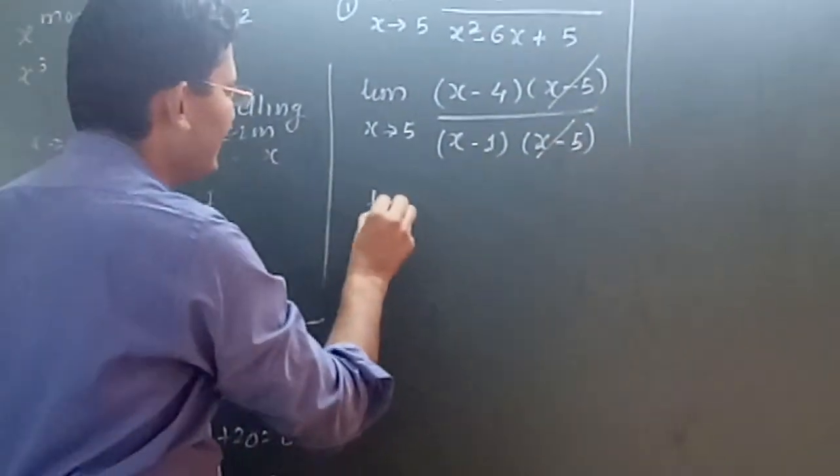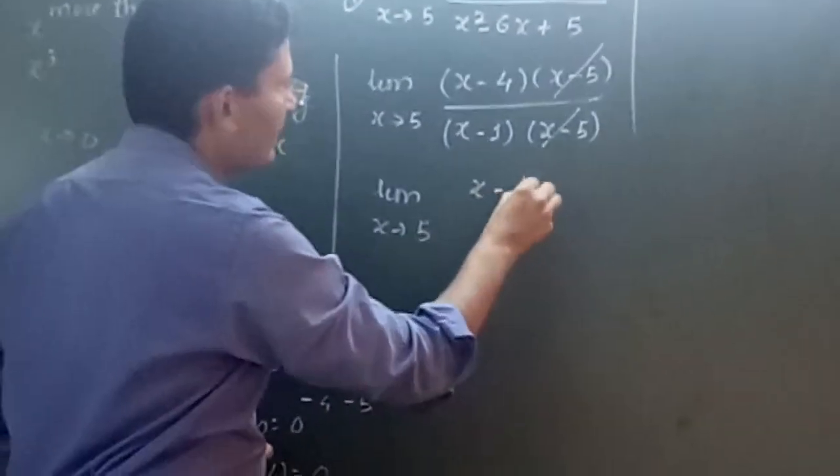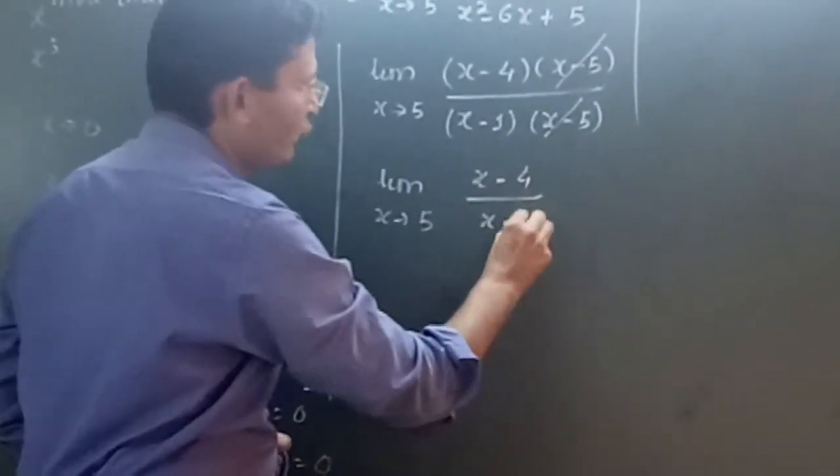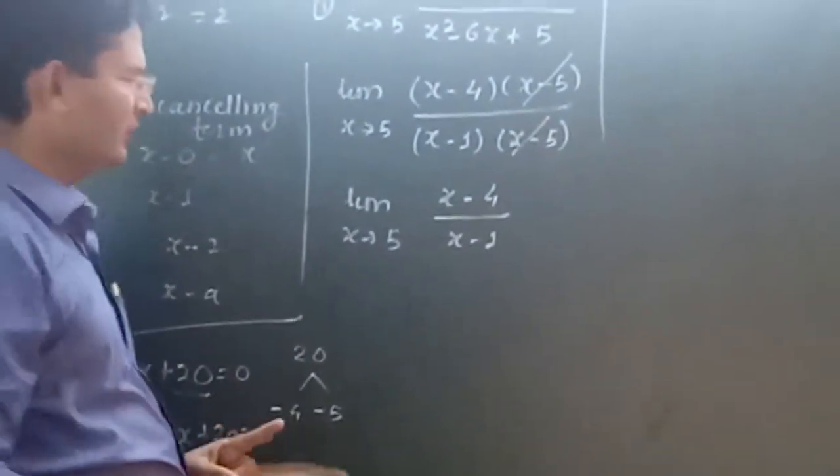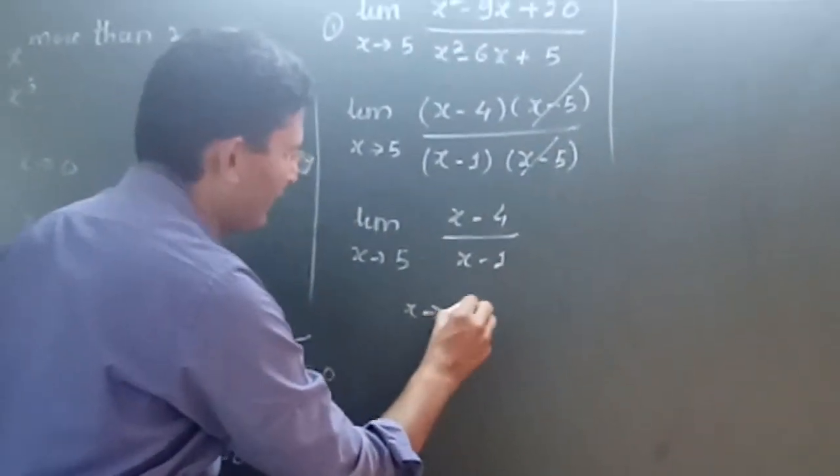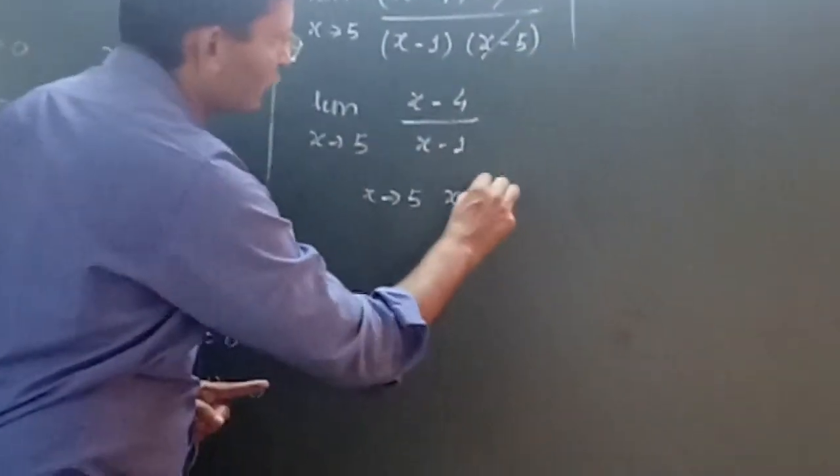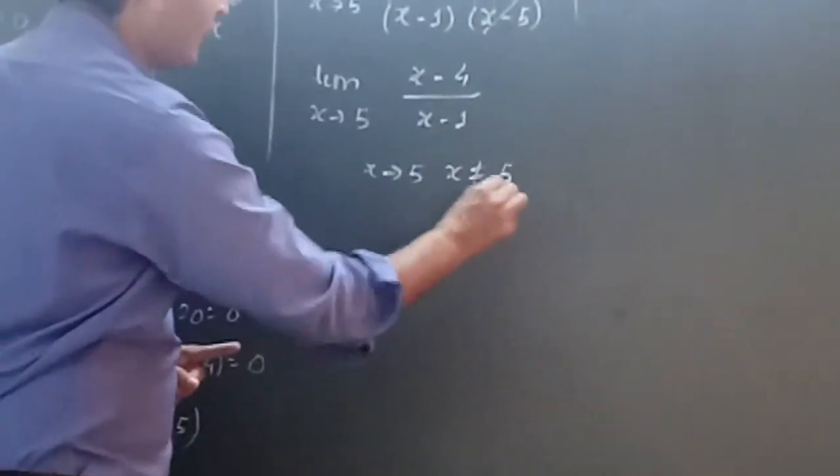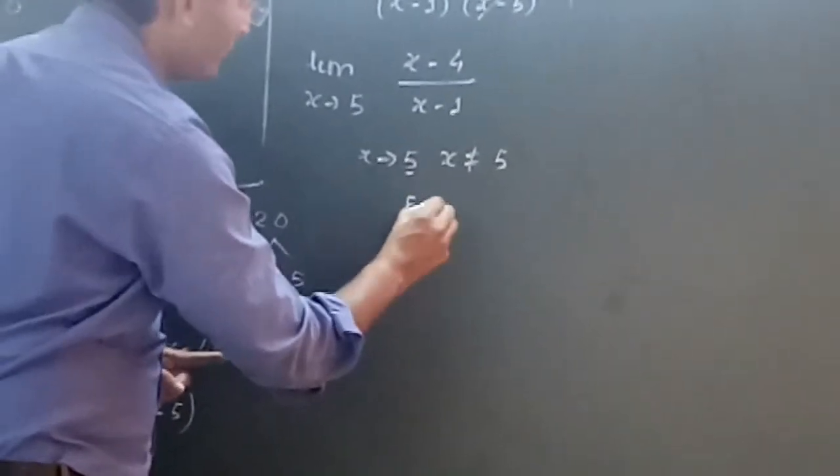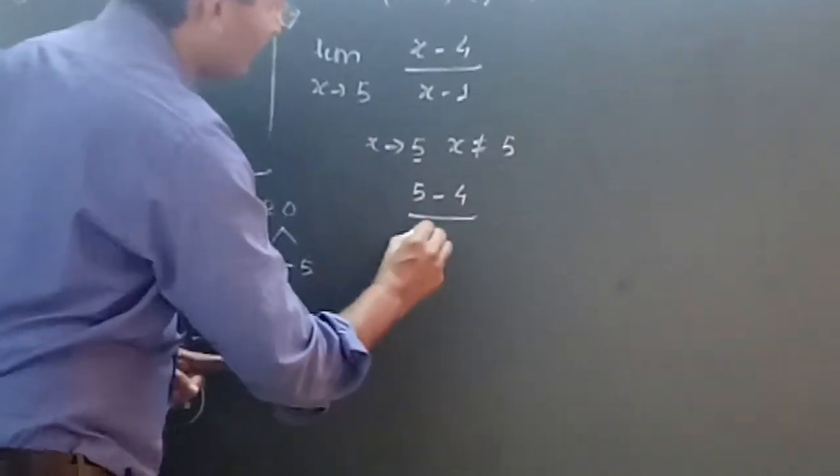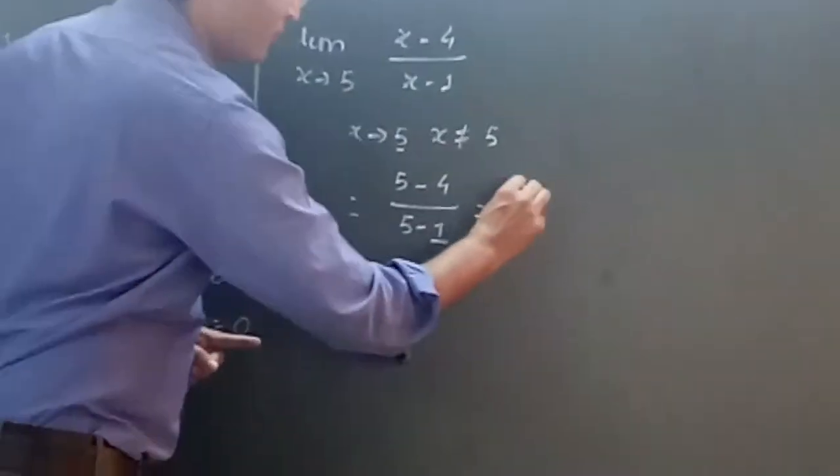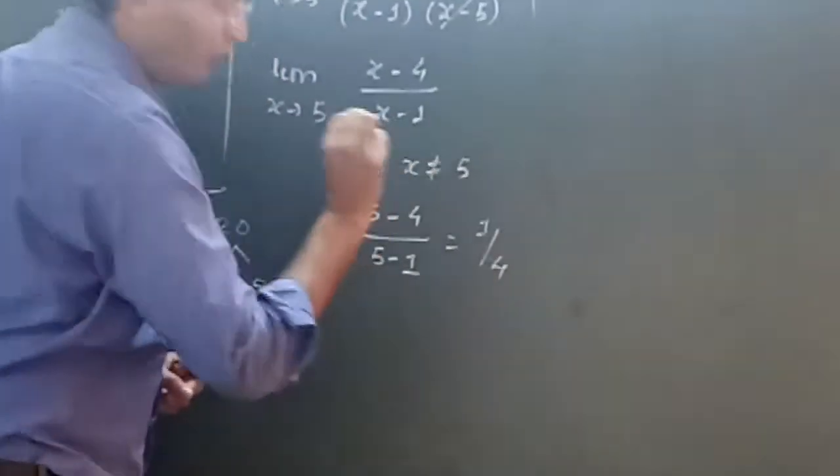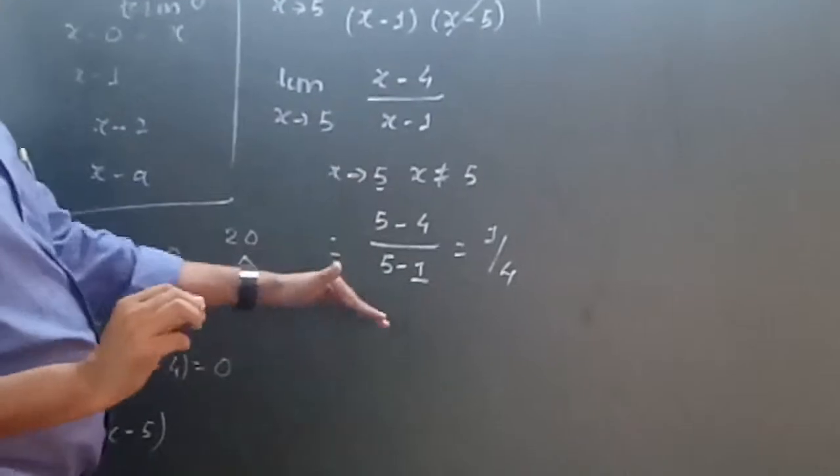And what is remaining then? Limit x tends to 5, x minus 4 upon x minus 1. Now once the canceling term got canceled, then we will substitute the value. x tends to 5, x is not equal to 5. We will substitute 5 instead of x. So it would be 5 minus 4 upon 5 minus 1. 5 minus 4 would be 1 upon 4. This is the boards method.